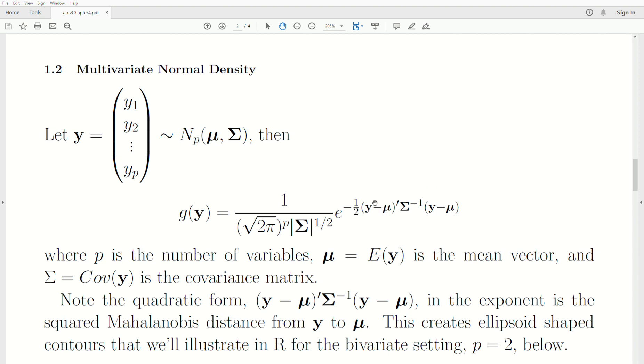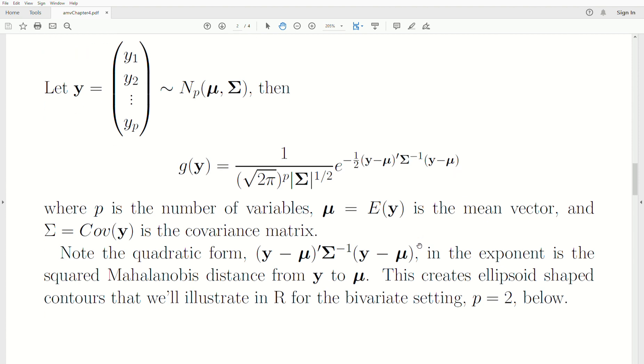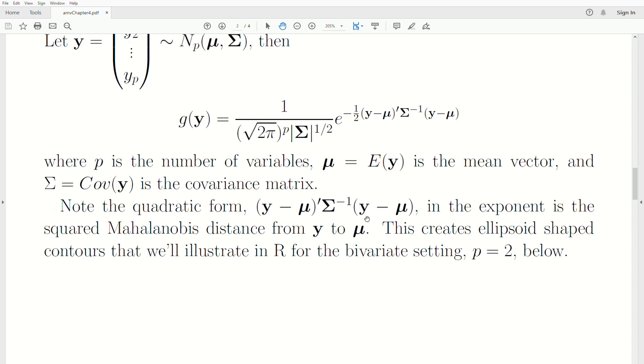Now, note the quadratic form in the exponent. And it's the squared Mahalanobis distance from Y to mu. And this creates ellipsoid shaped contours. We'll illustrate it in the bivariate setting, which is p equals two below. But this is it. This is the density. So, you enter values into this curve, which is the Ys. And then it calculates a number, which is associated with the probability of that vector happening.